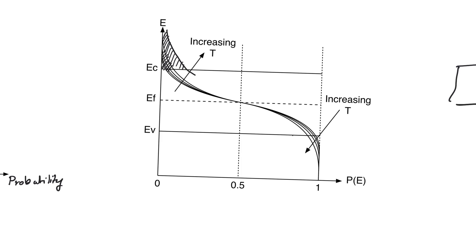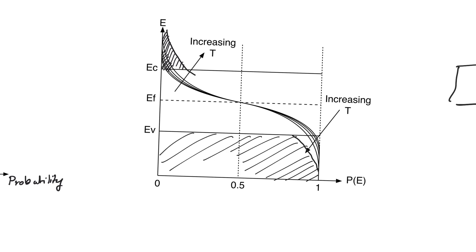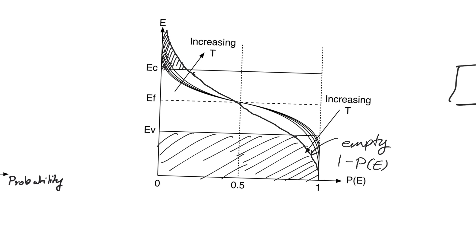As the tail increases in the conduction band, there will also be a tail that increases in the valence band. This tail in the valence band represents the energy states that are now empty — it is 1 minus p(E) — the probability that we will not find electrons in the valence band. Lack of electrons in the valence band means a hole, which is a charge carrier. Presence of an electron in the conduction band is also a charge carrier. So when temperature increases, the tail increases in both bands, meaning we have more holes and more electrons.